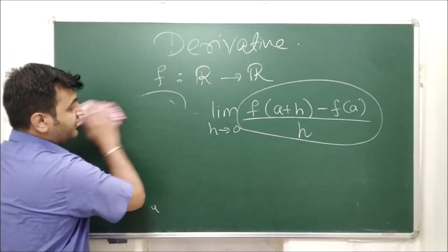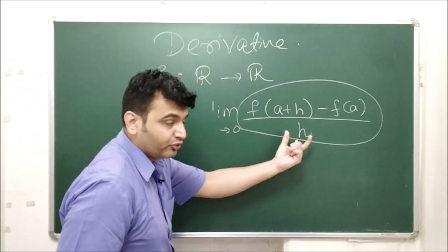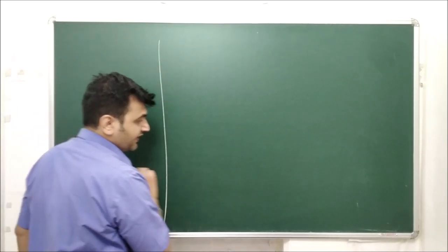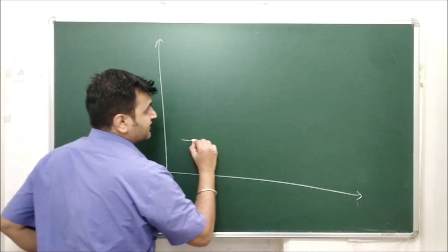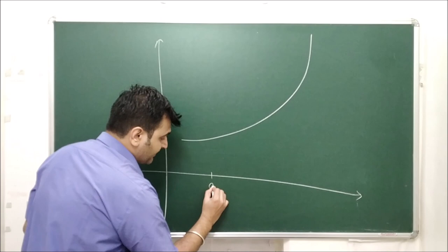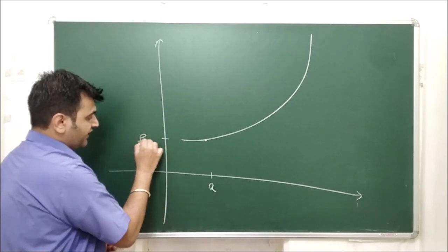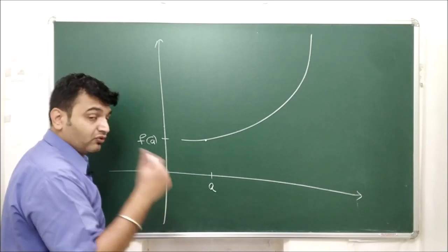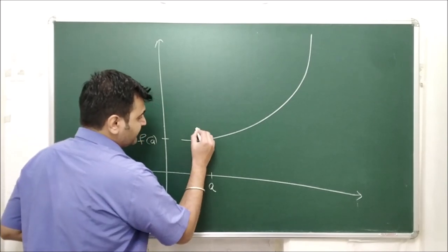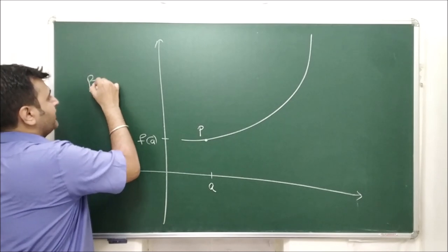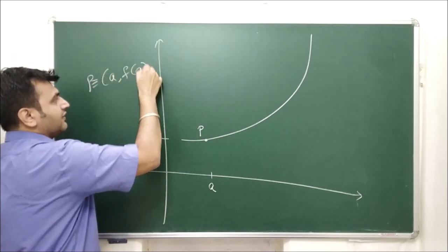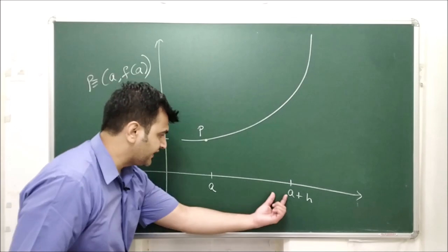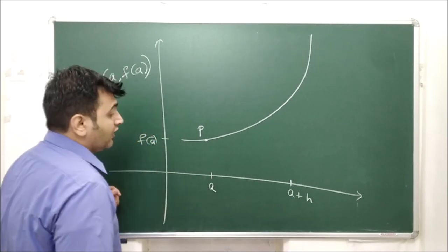Let's understand what this ratio represents by drawing the graph of a function. Suppose this is my x-y axis and this is the graph of some function. Let me mark the point a on the x-axis, so f(a) is the corresponding y-value. The point P is (a, f(a)). Now if h is positive, a+h is to the right of a on the x-axis.